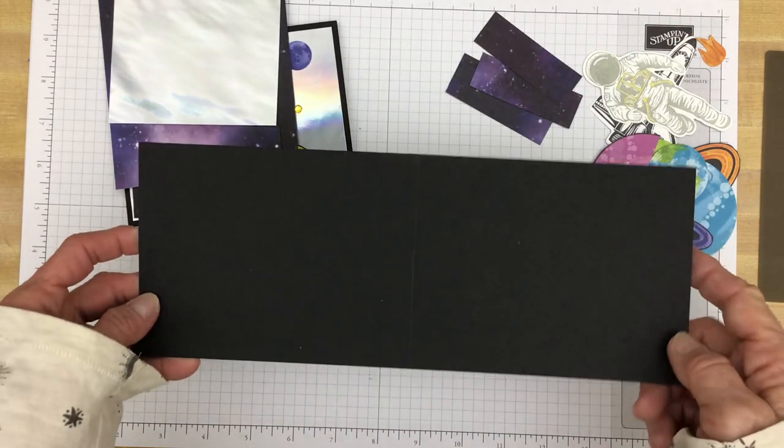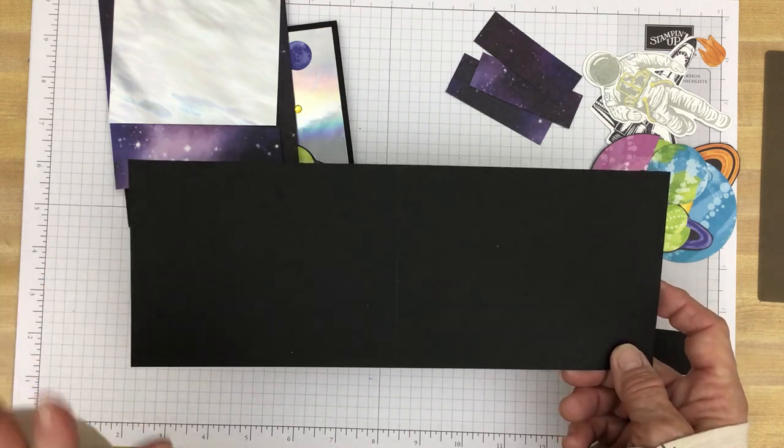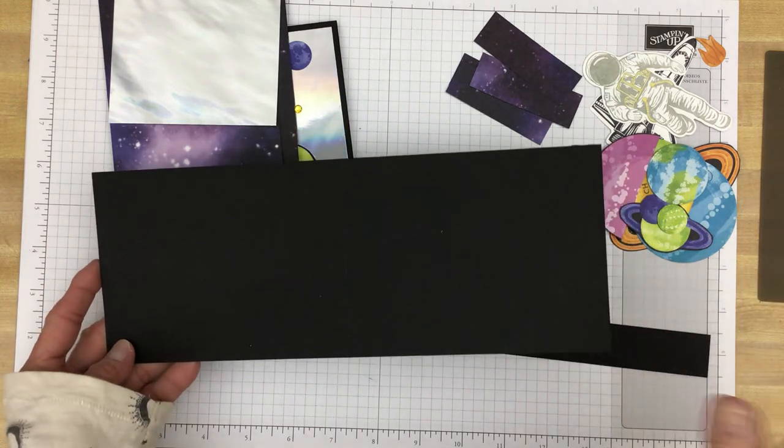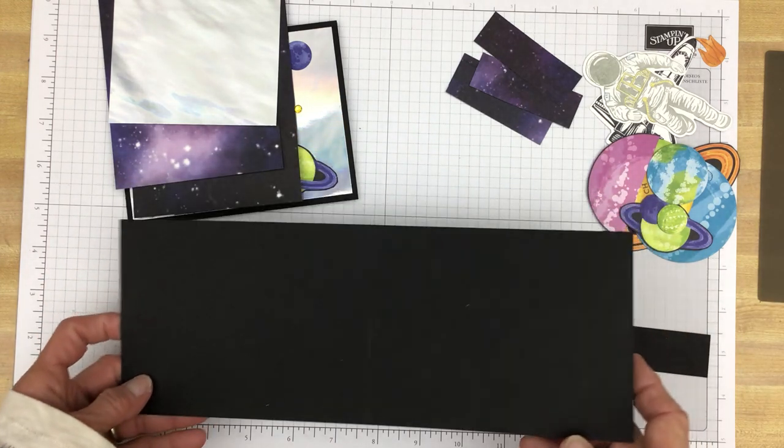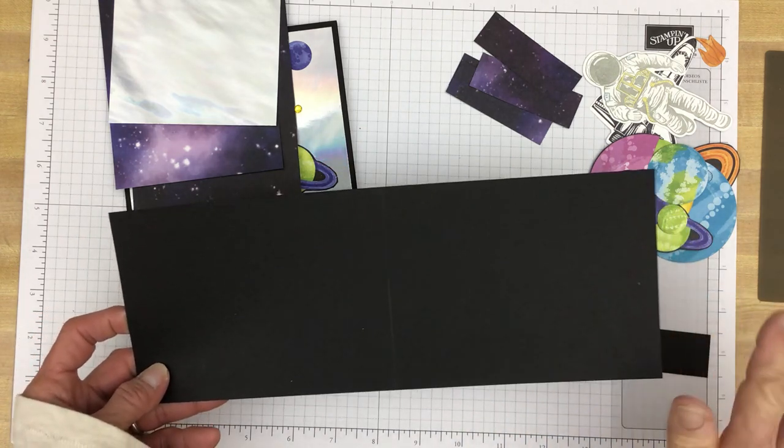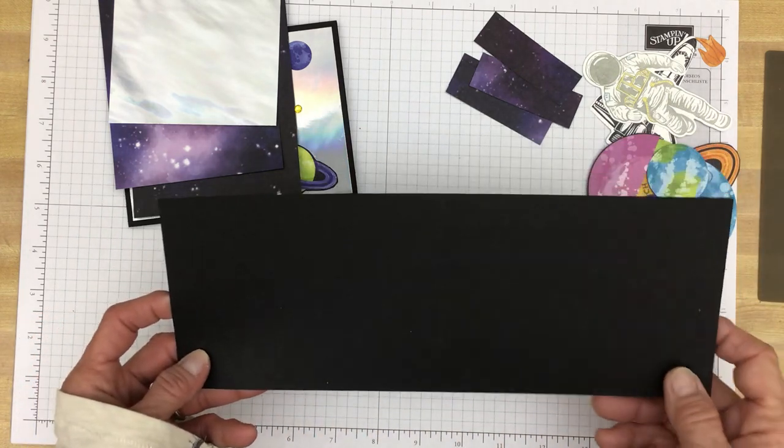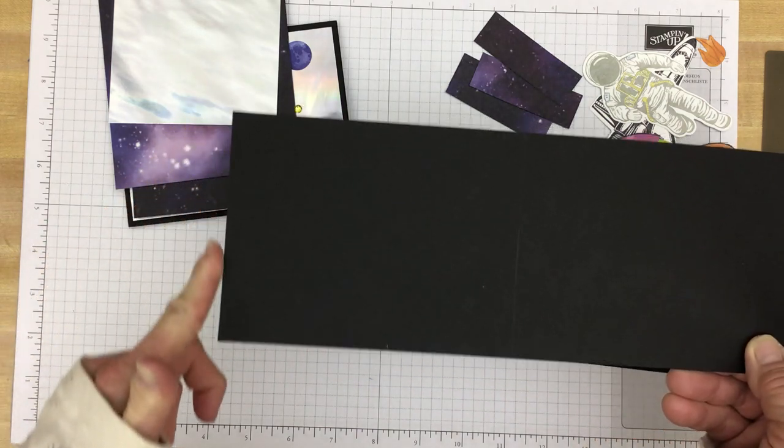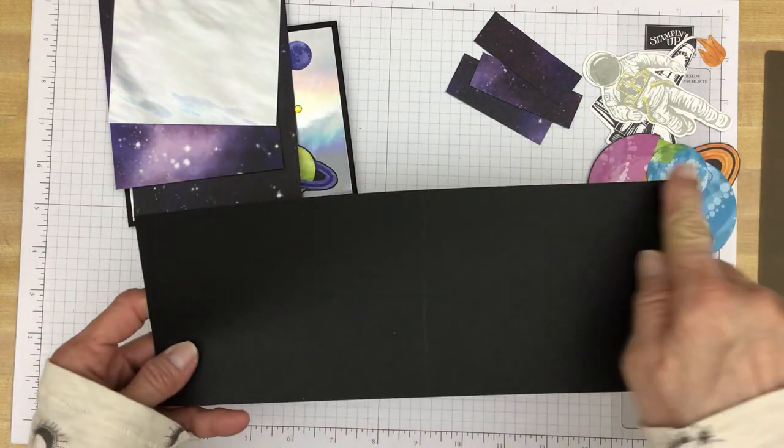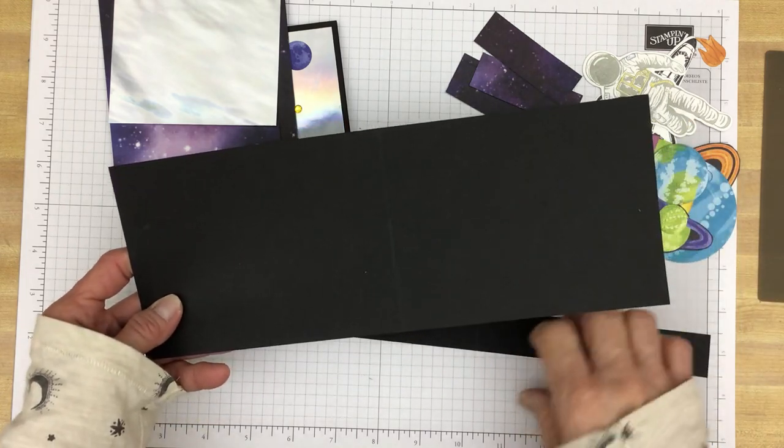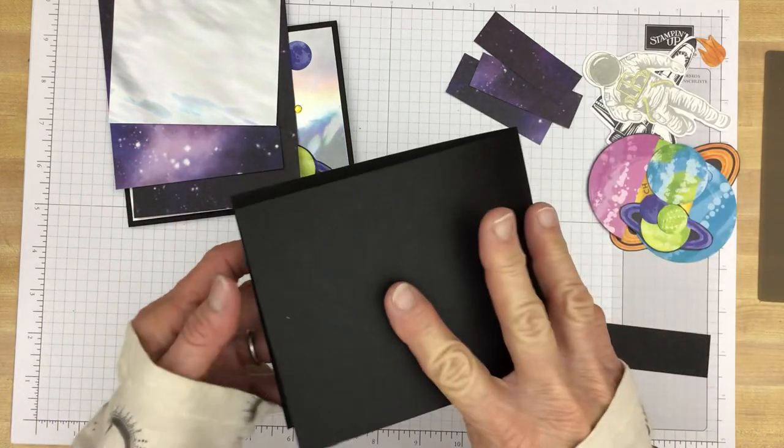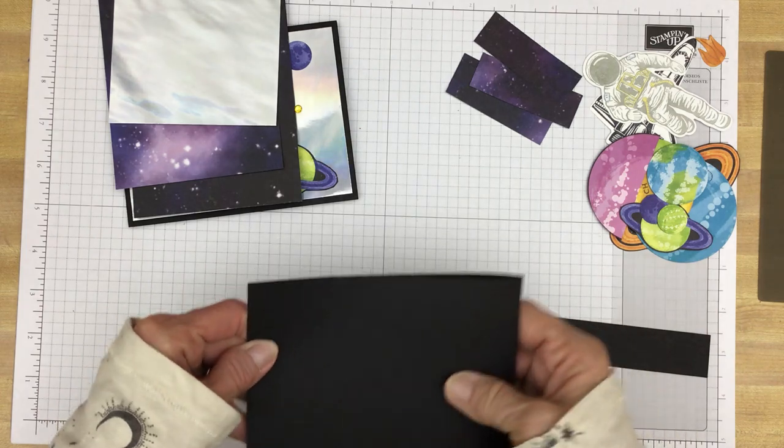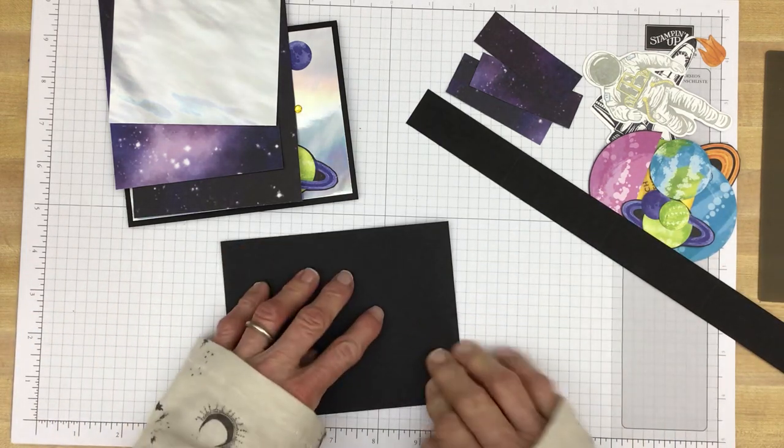So we're going to need a piece of cardstock. And you can use any cardstock you like. And you can use any stamps that you like. You don't have to use the Reach for the Stars. You can use whatever you like. But I have taken this, and it is basic black. It's 4 and a quarter by 11, scored at 5 and a half. So we'll just fold that right now.